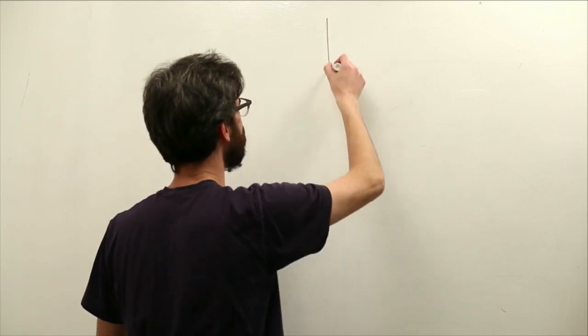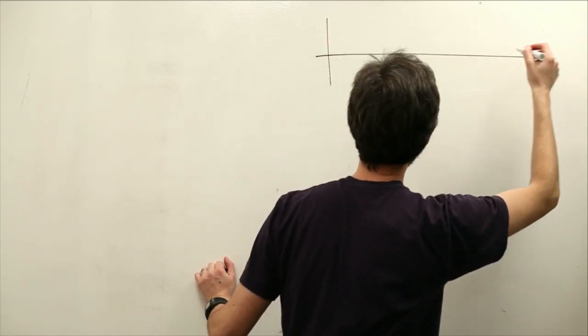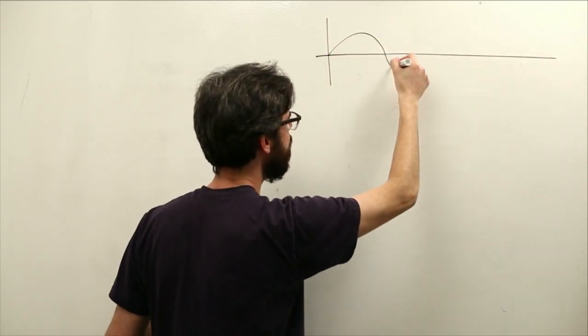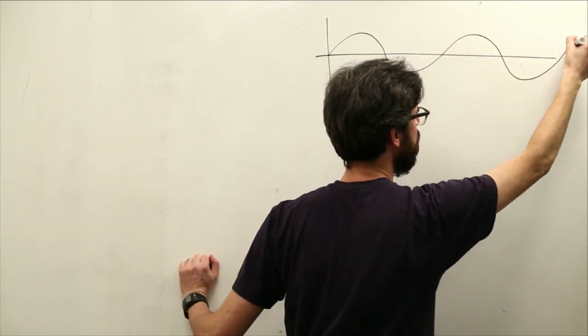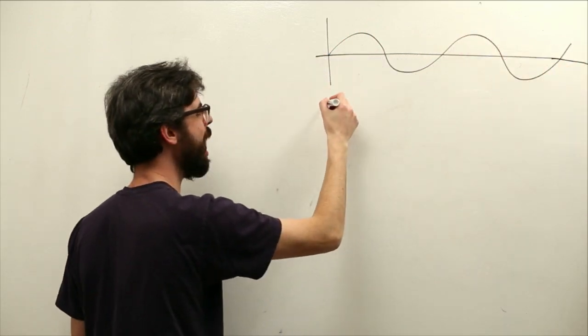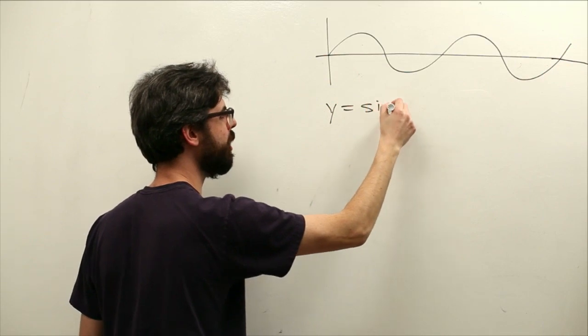So if you've ever seen a graph of the sine function, because maybe that's what you look at in your spare time, it's going to look something like this. It's a wave pattern, right? If this is a graph of y equals sine of x.